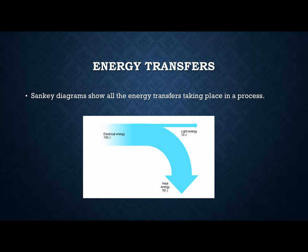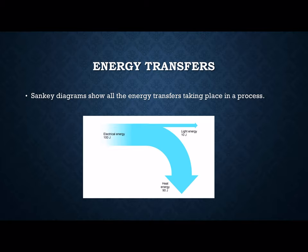A Sankey diagram shows all the energy transfers taking place in one process. For example, electrical energy of 100 joules is provided. This is converted into heat energy of 90 joules and light energy of 10 joules. If this were a light bulb, it would not be very efficient — why? The light energy is only 10 joules whereas the heat is 90 joules. So only 10 out of 100 joules are being used for what we want, whereas 90 joules would be wasted.